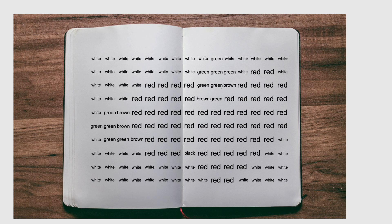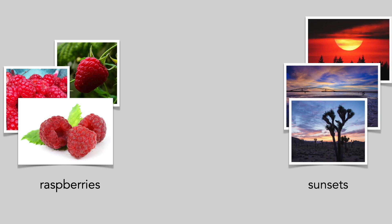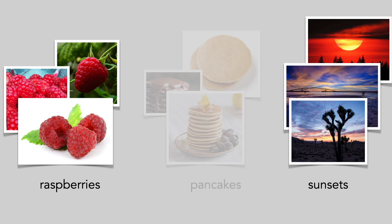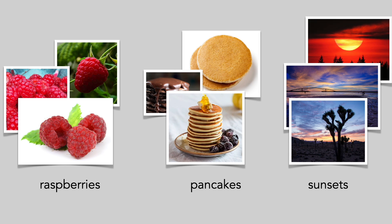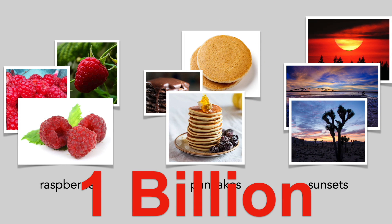OK, now we can represent an image in a language model. But the model doesn't really understand the image or how it relates to English words and phrases. We can teach this knowledge by providing some training data — for example, lots of raspberry images, sunsets, pancakes, and just about everything else. In fact, we'll train it on a billion captioned images from the internet.